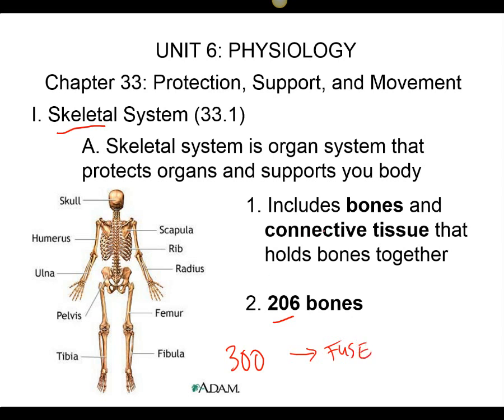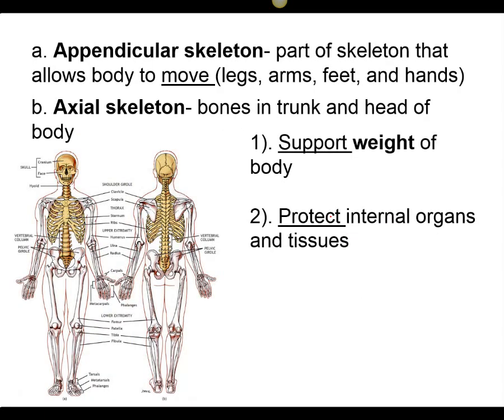We're going to look at the elements of the skeletal system. It's not just our bones, but also different types of connective tissue like cartilage and ligaments. We have two different skeletons: our axial skeleton, which goes down the middle of our axis — it's going to be our skull, our spine, and our ribcage.